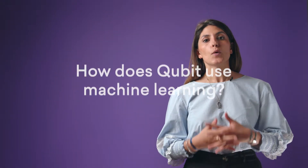At Qubit we use machine learning to train our recommendations algorithms. We have a range that we use to support different strategies and our best for different points on the customer journey. Machine learning is a crucial part of Qubit Aura, which creates one-to-one personalized experiences for mobile web.